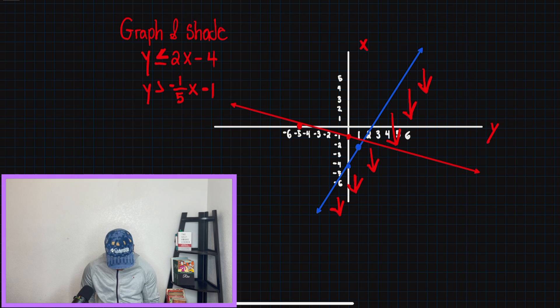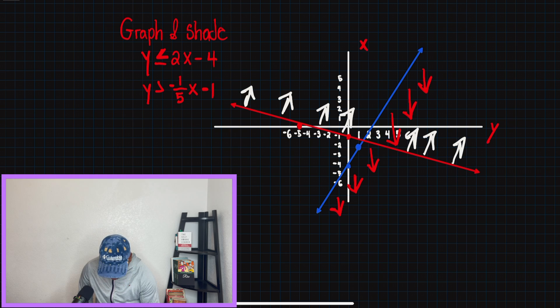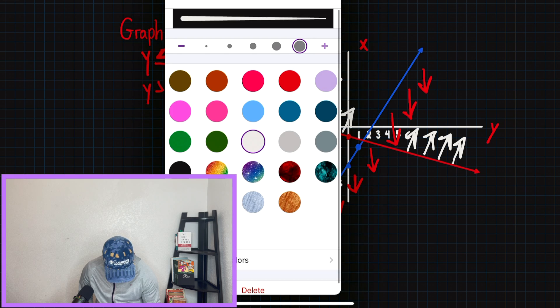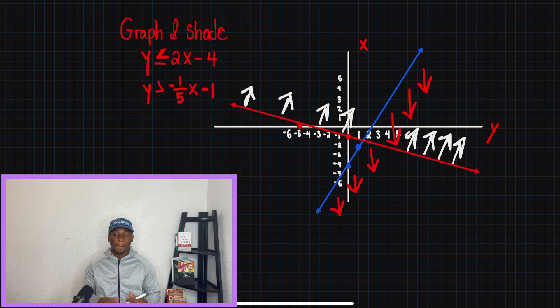So it tells us that y is greater than. So when we have greater than, that means we're shading above the line. And what I'm looking for, what I'm shading is where these two sections meet and both of them are satisfied. So what I'm going to do right now is, I switched to another color and we're going to highlight the direction of shading.